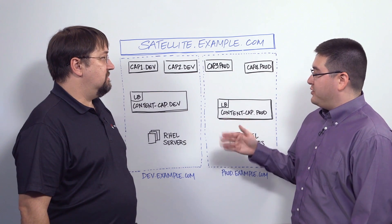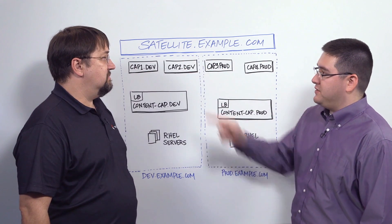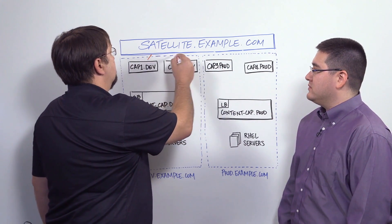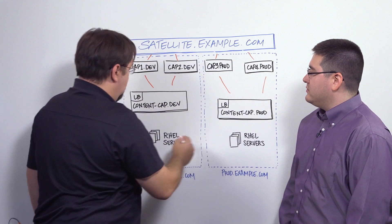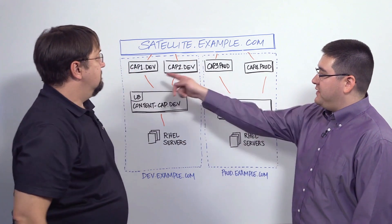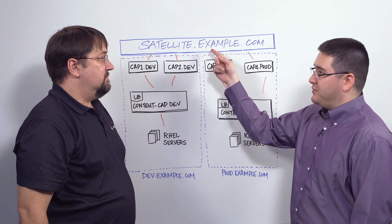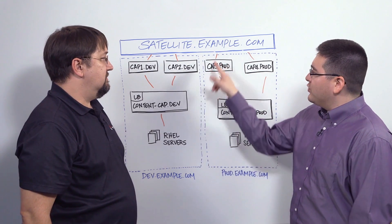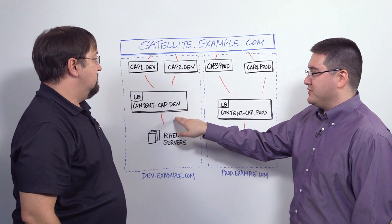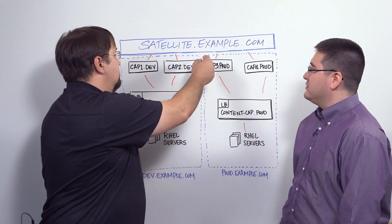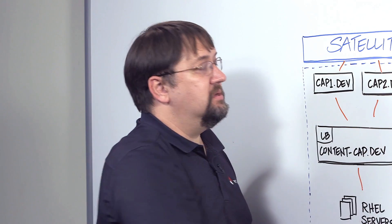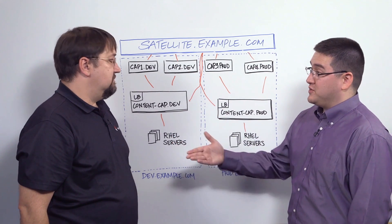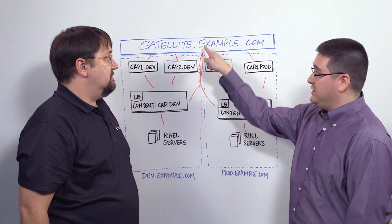Can we depict the network relationships between each of the pieces? The satellite server and capsule servers will be connected here, and then from the load balancers connected here, and there's a load balancer to the RHEL systems. The remote capsules CAP 1, 2, 3, and 4 are all directly communicating with and controlled by the Satellite 6 management head. When configuring the load balancer, you've got to configure it to a virtual capsule — Satellite will be connected to these directly. The RHEL managed servers and virtual machines all go through the load balancer; they do not talk directly to the Satellite server.